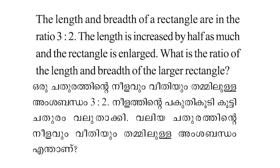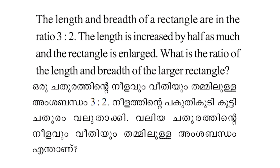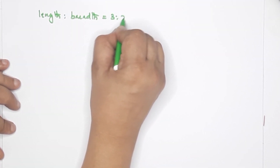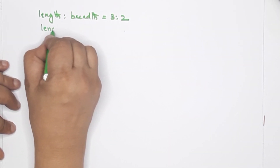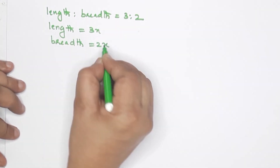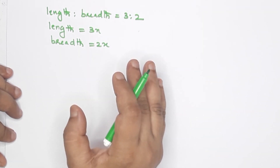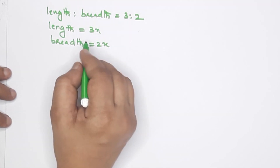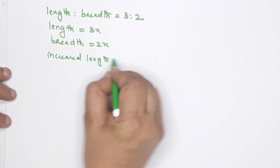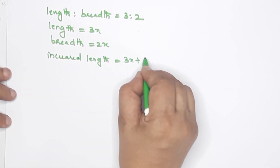The length and breadth of a rectangle are in the ratio 3 is to 2. The length is increased by half as much and the rectangle is enlarged. Length is 3x, breadth is 2x. The increased length is 3x plus 3x by 2, which equals 9x by 2.